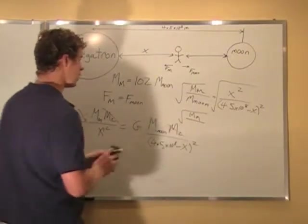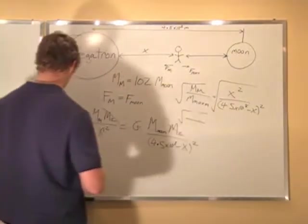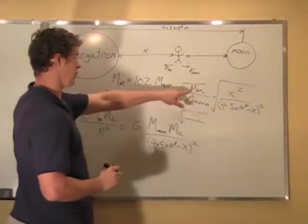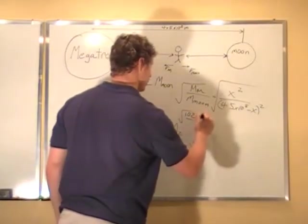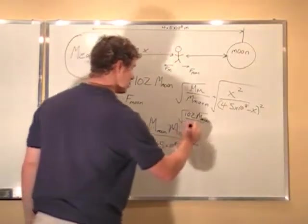And so all we have to do, actually, it'll probably be easier if we plug in for the mass of Megatron. The mass of Megatron is 102 mass of the moon. So instead of the mass of Megatron, we put 102 mass of the moon. And the bottom is just mass of the moon. And so those are going to cancel out.